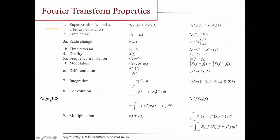The transform pair table is on page 328. This is the end of this lecture, which covers mostly the technique of the Fourier transform. In the next lecture we will talk about the application of the Fourier transform to system representations. Bye!